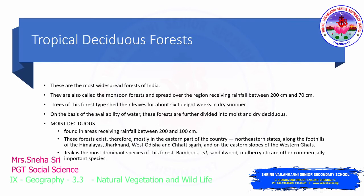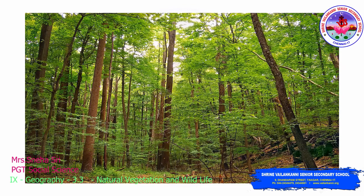Moist deciduous forests are found in areas which receive rainfall between 100 cm and 200 cm. These forests exist mostly in the eastern part of the country — northeastern states, along the foothills of the Himalayas, Jharkhand, West Odisha, Chhattisgarh, and on the eastern slopes of the Western Ghats. Teak is the most dominant species of this type of vegetation. Bamboo, sal, sandalwood, and mulberry are other commercially important species of moist deciduous forests. On the image, you are able to see moist deciduous forests.